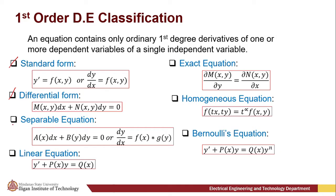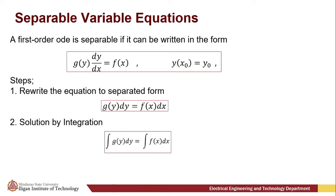First, we're going to discuss the separable equation. A first-order ODE is separable if it can be written in the form g(y) dy/dx equals f(x). The method on finding the solution of this separable variable equation is: first, we're going to rewrite the equation to its separated form, separating the term with variable y and the term with variable x on different sides of the equation.